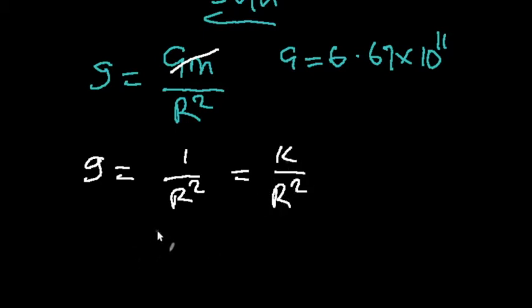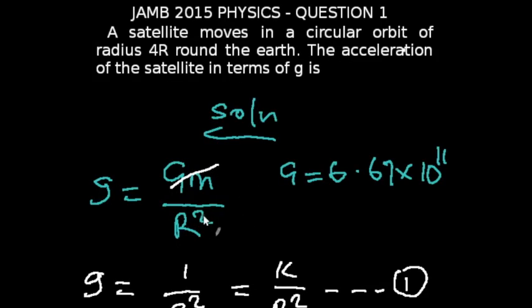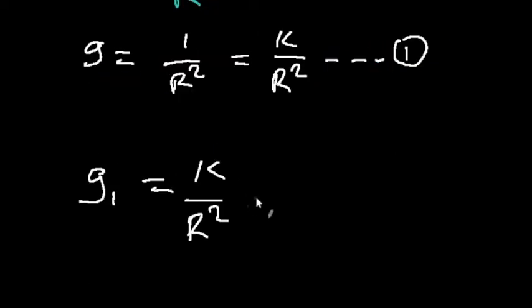For the satellite, acceleration due to gravity will be g subscript 1, which will be equal to k over R squared. Our radius here is 4R, so that will be k over 4R squared.